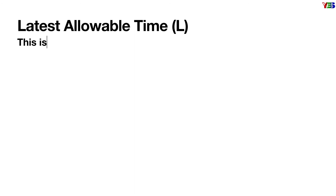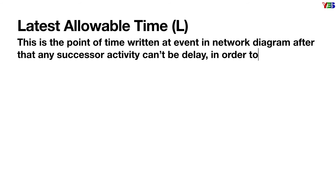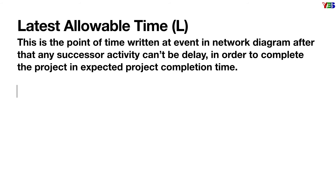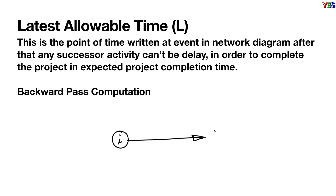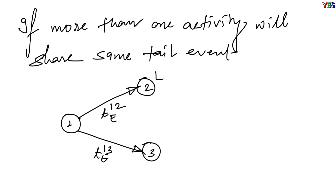Now let us know what is latest allowable time. This is the point of time written at an event in the network diagram, after which any successor activity can't be delayed in order to complete the project in expected project completion time. To calculate this, we need to go for backward pass computation. In this process, the latest allowable time at the tail event of any activity is calculated by subtracting the expected activity completion time from the latest allowable time at the head event. If more than one activity shares the same tail event, the minimum value will be the correct one.